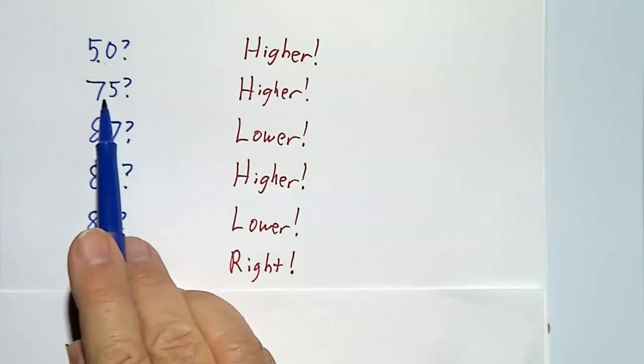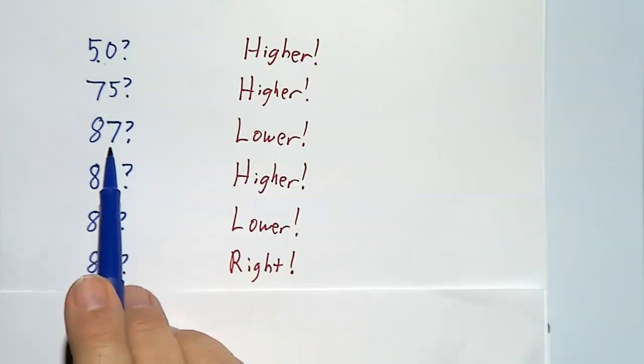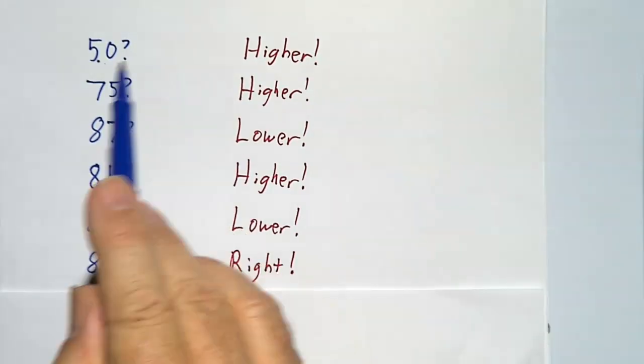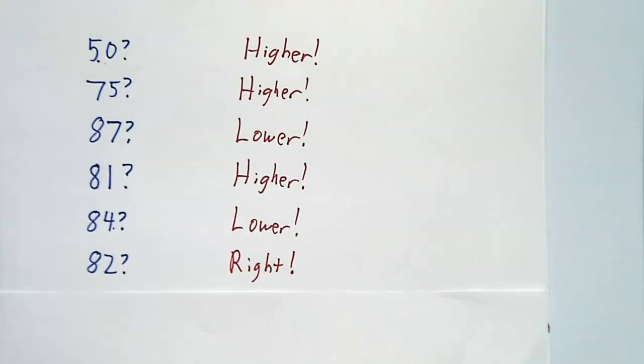Once I say higher, you know it's between 75 and 100. You guess the middle, 87. I say lower, you know it's between 75 and 87. You guess the middle, then you get the middle of the remaining range. You guess the middle, and pretty soon you've narrowed it down and you got the right answer.